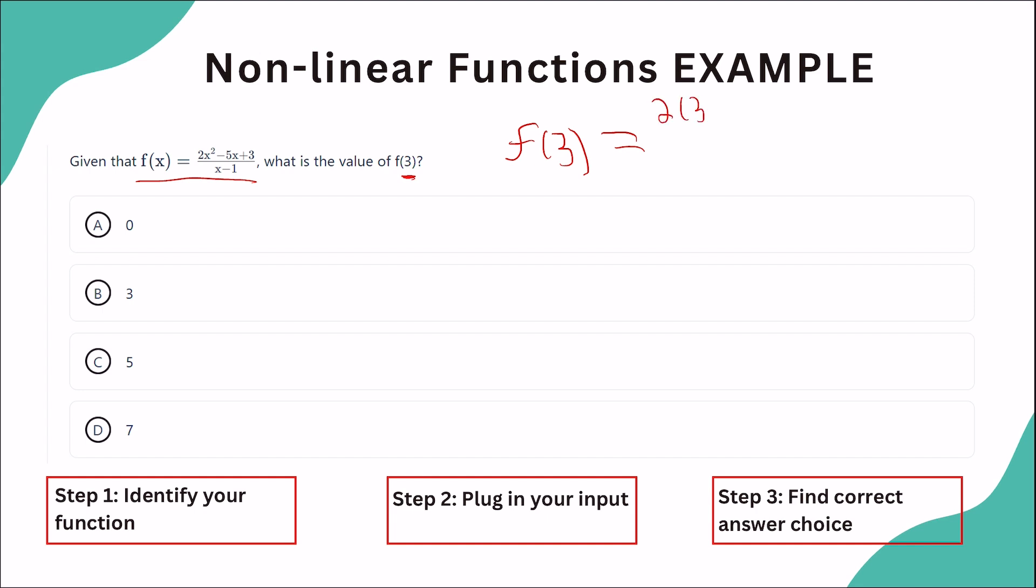So 2 times 3 squared minus 5 times 3 plus 3, over 3 minus 1. Now this should be a lot simpler to answer, so we have 18 minus 15 plus 3 over 2, and this is finally going to give us 6 over 2, which equals 3.